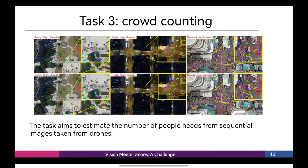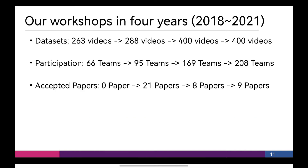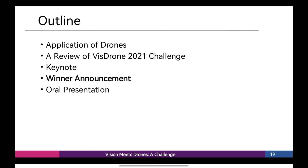The VisDrone 2021 Crowd Counting Challenge requires participating algorithms to count persons in each frame. The goal of counting algorithms is to estimate the number of people in an image. We provide a dataset with pairs of RGB-T images. Each algorithm is evaluated by computing the mean absolute error and mean squared error between the predicted number of people and ground truth. After four years of development, our dataset increased from 263 to 400 videos, the number of participating teams increased from 66 to 208, and the number of accepted papers increased from 0 to 9. To our delight, many teams performed well in the competition.